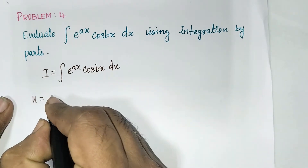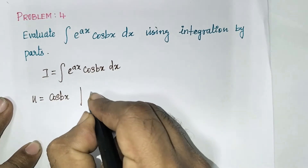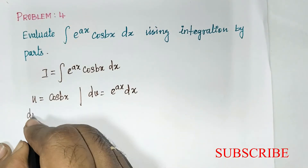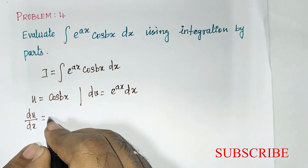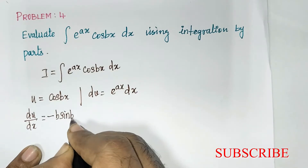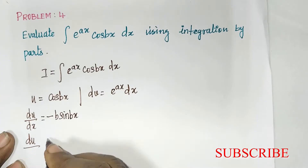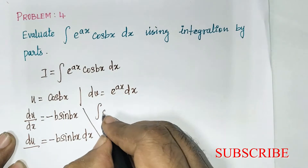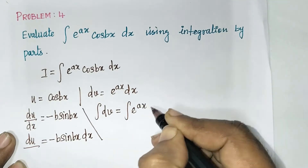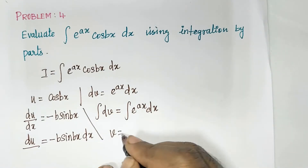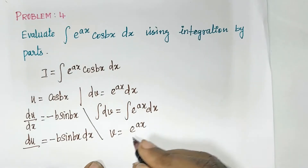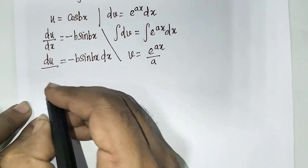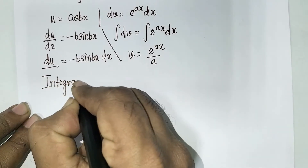Here we have exponential and trigonometry, so I will take u = cos(bx) as trigonometry, and dv = e^(ax) dx as the rest. I differentiate u: du/dx = -b sin(bx), so du = -b sin(bx) dx. For v, the integral of dv = integral of e^(ax) dx, so v = e^(ax) / a.